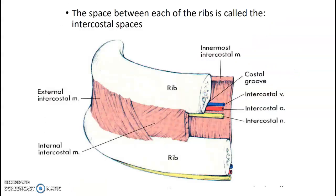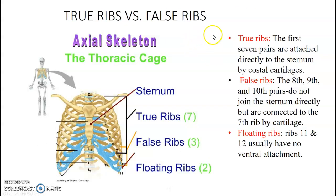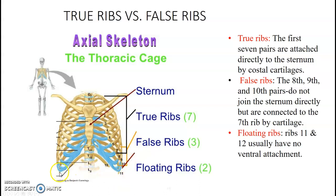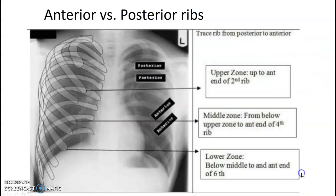The space between each of the ribs is called the intercostal spaces. There are true ribs, false ribs, and floating ribs. The true ribs are the first seven pairs — they attach directly to the sternum. Ribs 8, 9, and 10 do not attach to the sternum itself, but attach to the cartilage from the seventh rib. Ribs 11 and 12 are free-floating — they're just in the back and don't attach to the cartilage or sternum directly.